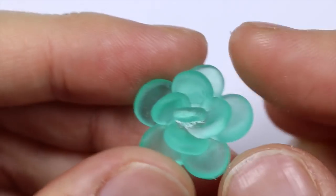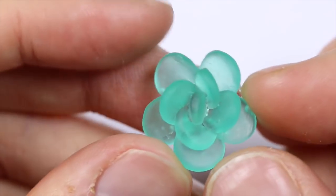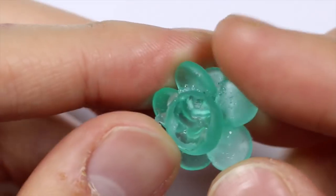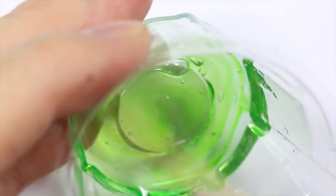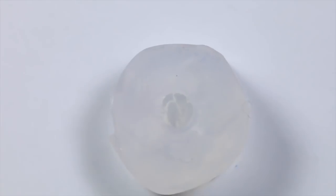And once you have that, you can slowly demold it and you should have something that looks like this. And I really like how frosted it looks because it kind of reminds me of the succulent effect.